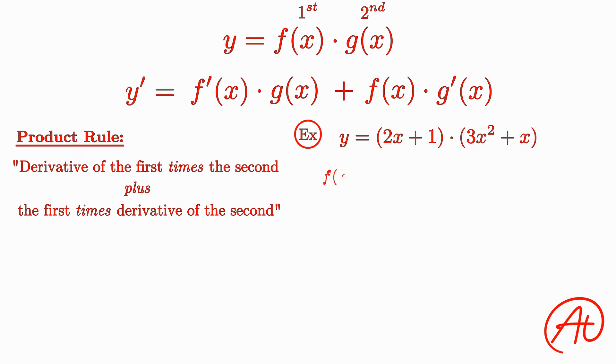In this case, our f(x) is 2x plus 1, and our g(x) is 3x squared plus x. Taking the derivative of each of these separately, we can use the power rule to find that f prime of x is 2, and g prime of x is 6x plus 1.